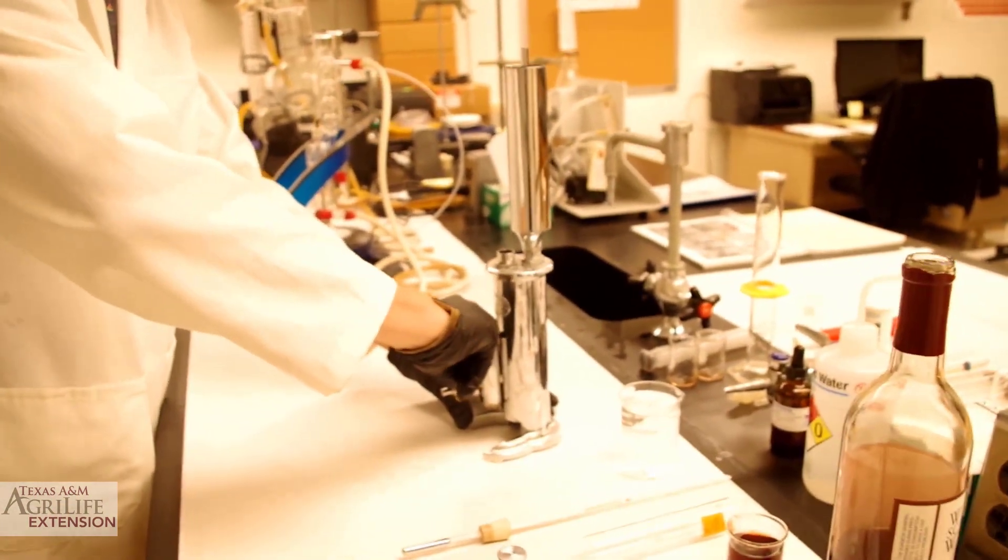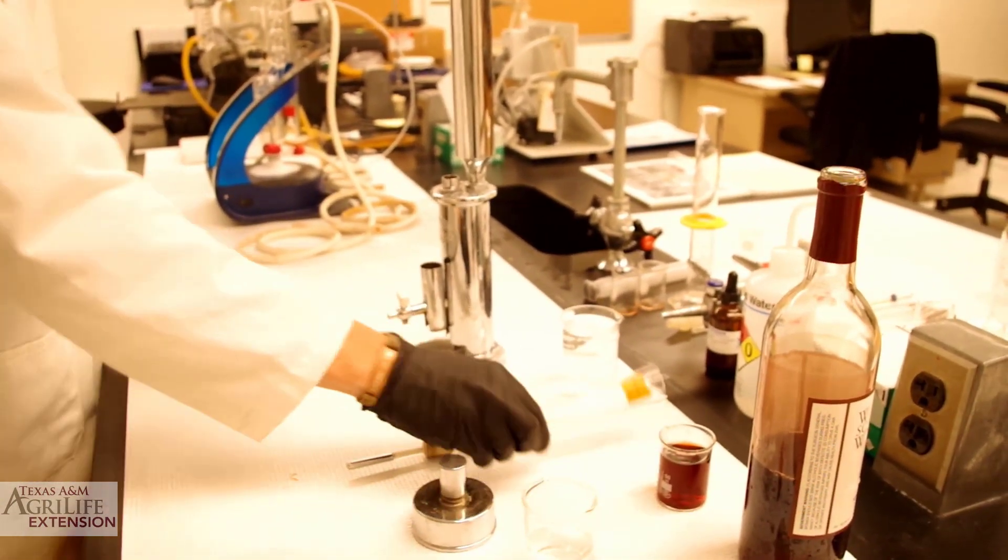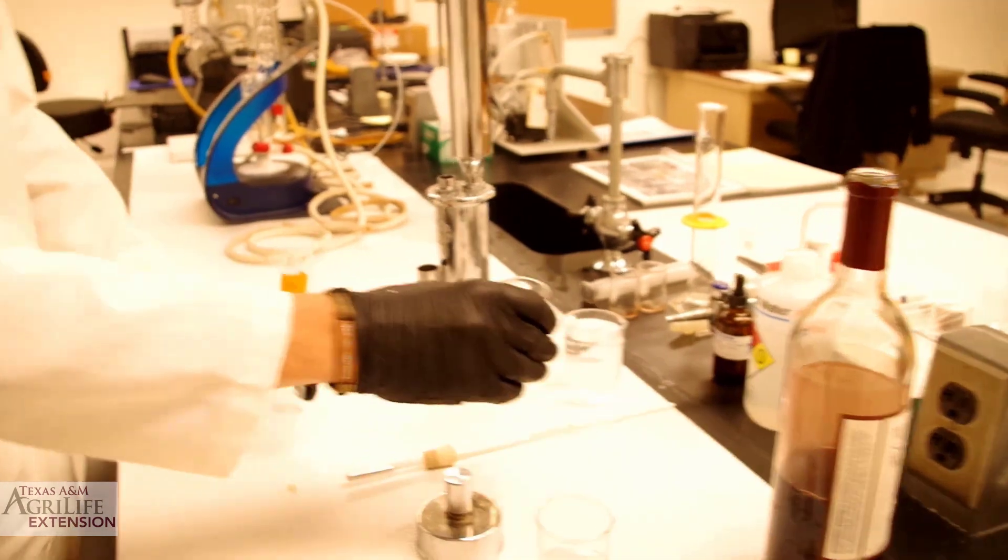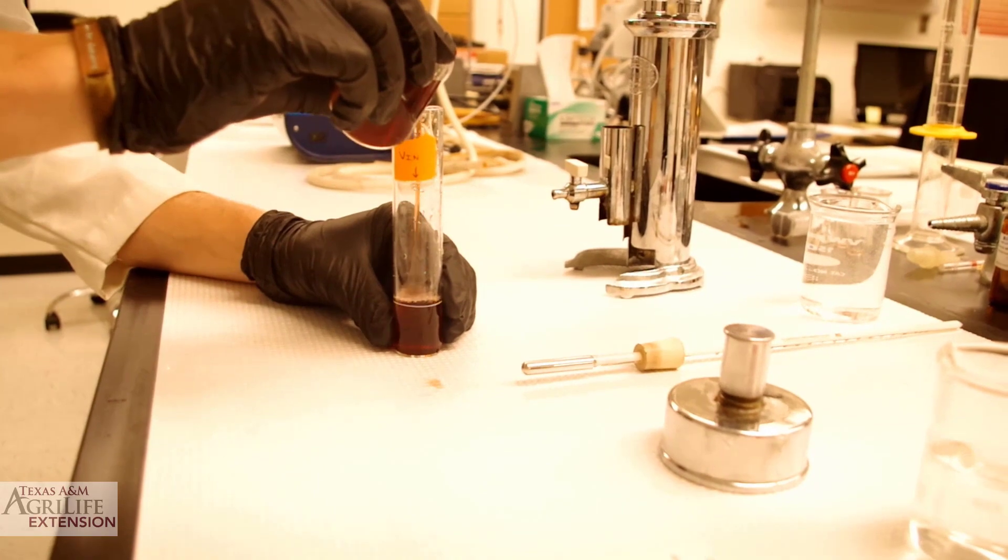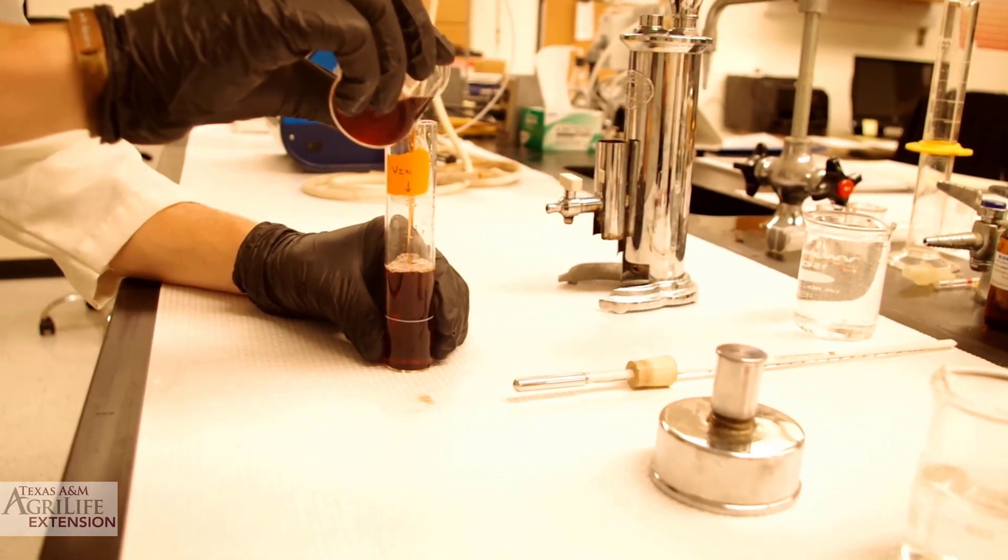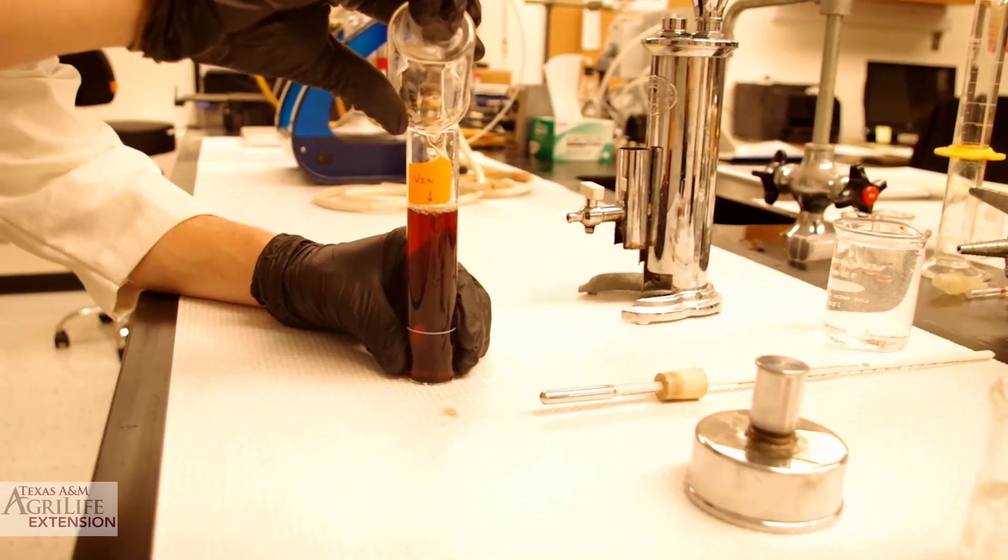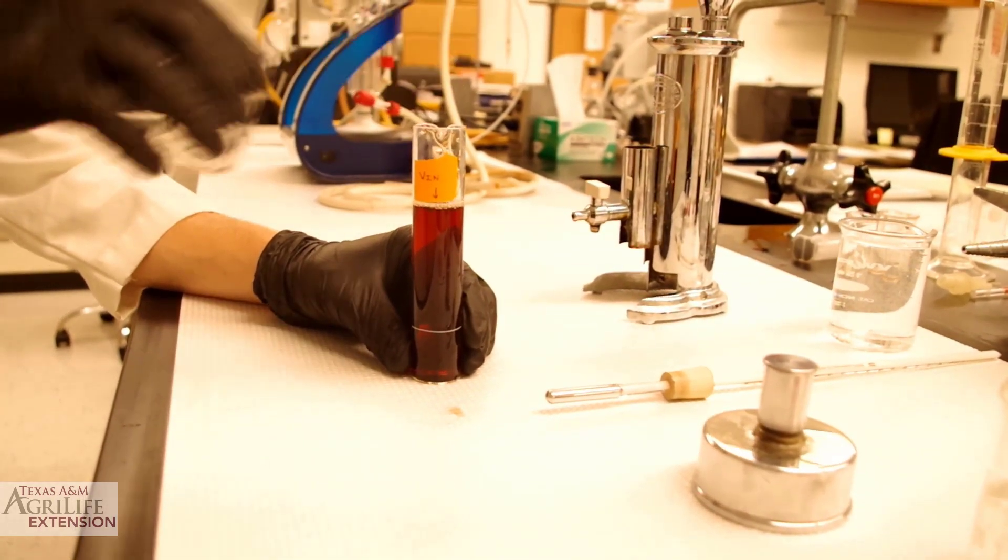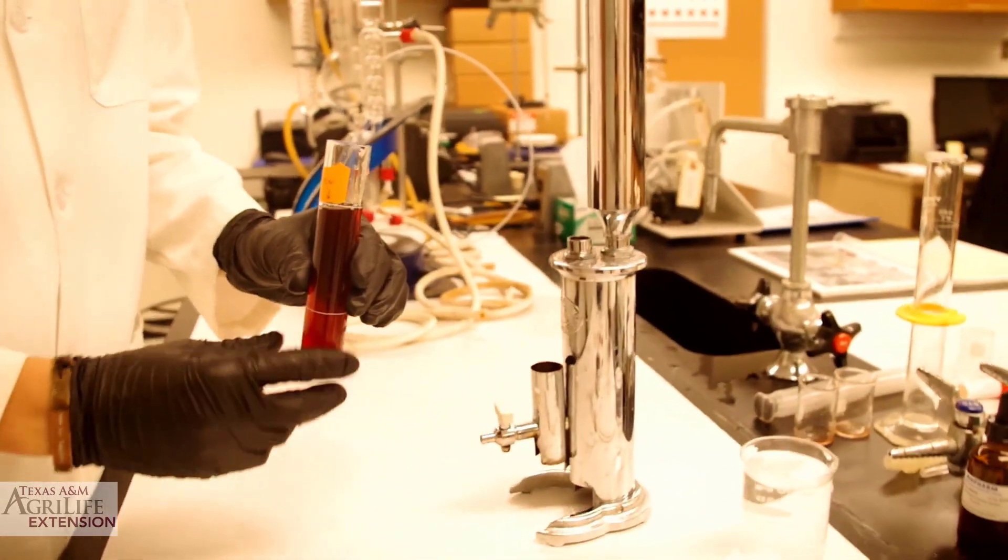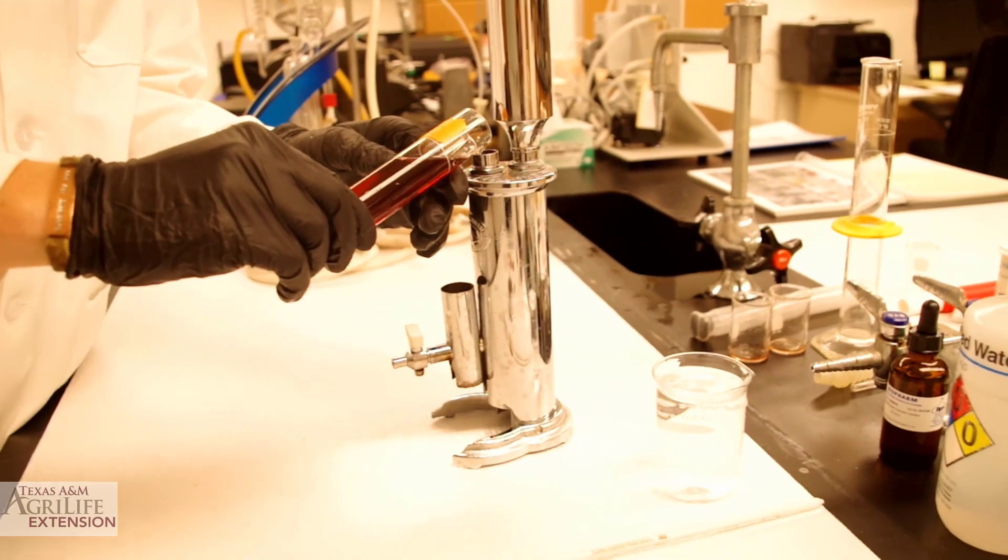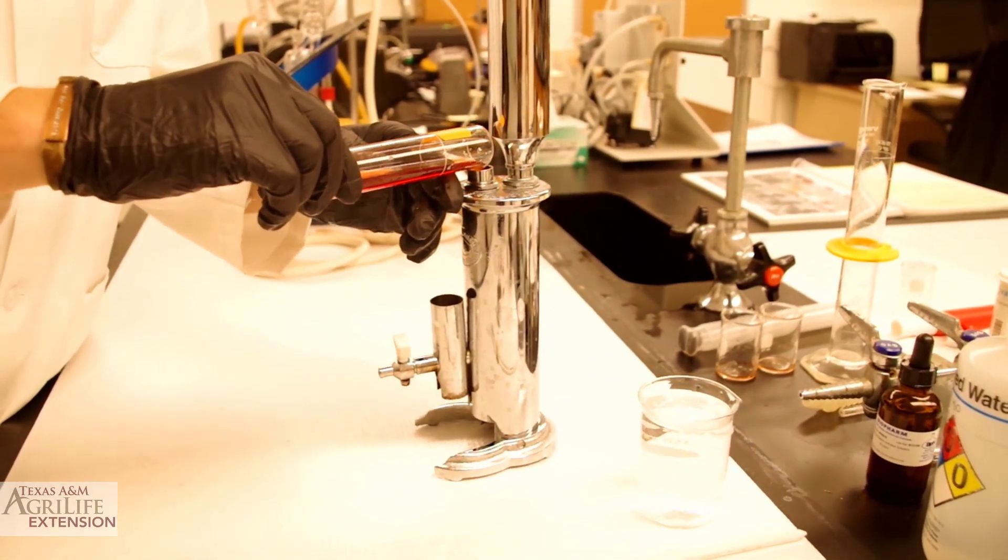Close the spout and proceed to measuring the proper volume for your wine sample. Using the measuring flask again, we fill it to the upper line, which indicates the required volume of wine. We can now pour our sample into the boiling chamber of the ebuliometer.